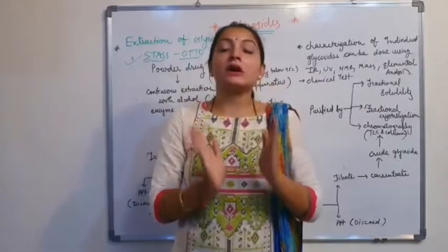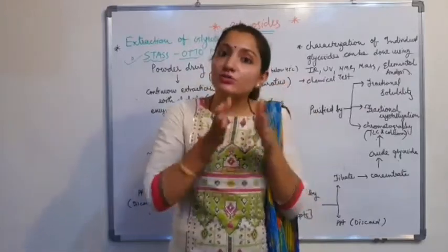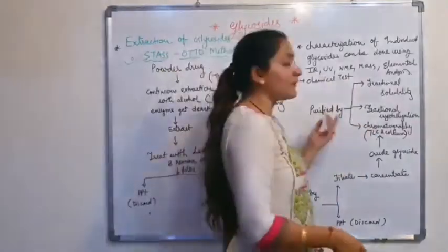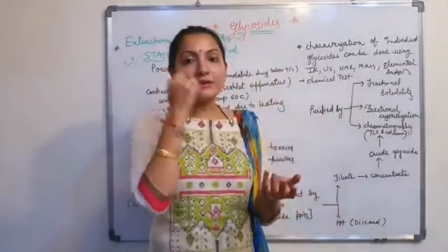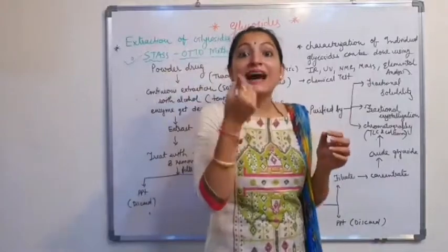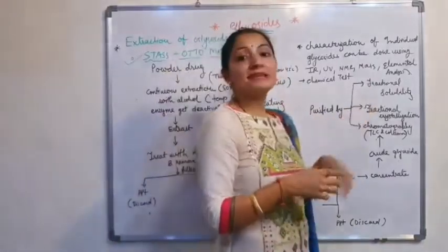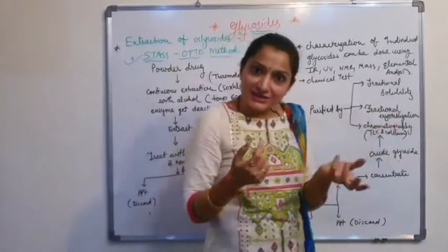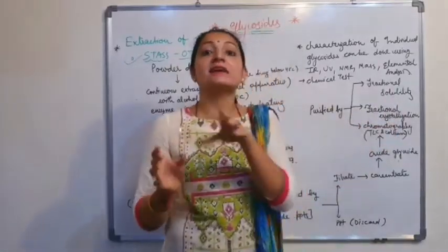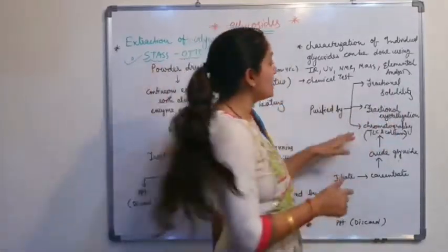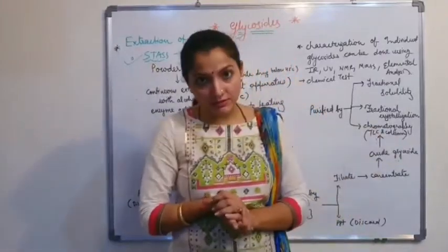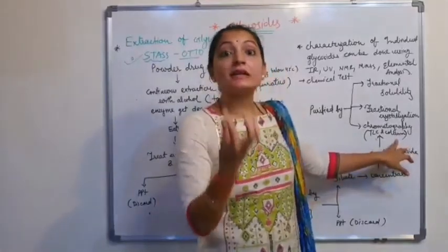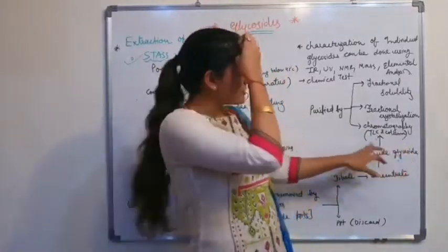The residue is crude glycoside, which is somewhat impure. We purify the glycoside by fractional crystallization using alcohol, or by chromatographic methods using preparative TLC and column chromatography.